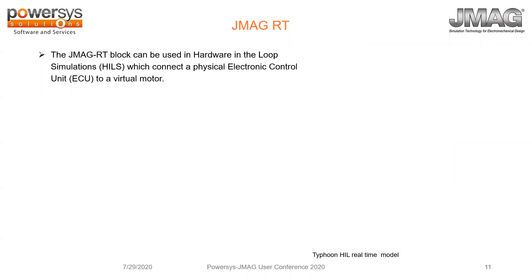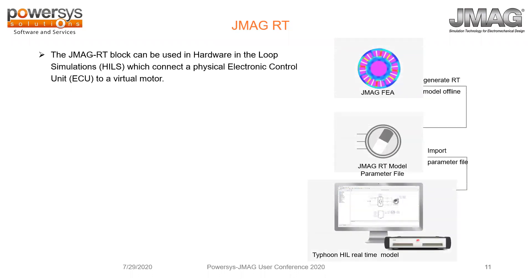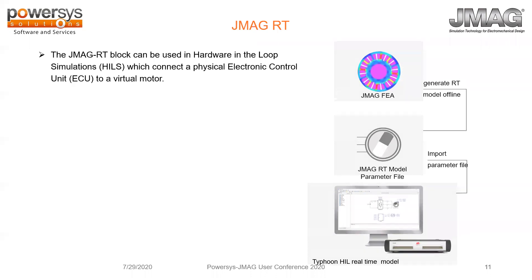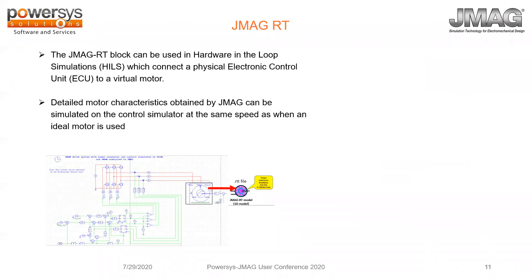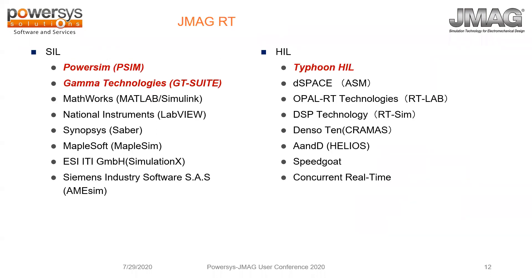The JMAG-RT block can be used in hardware-in-the-loop simulations, which connect the physical ECU to a virtual motor. As one example shown on screen, Typhoon HIL is a real-time platform — JMAG-RT is created from FEA and then imported directly into Typhoon. Detailed motor characteristics obtained by JMAG-RT can be simulated on the control simulator at the same speed as with an ideal motor model.